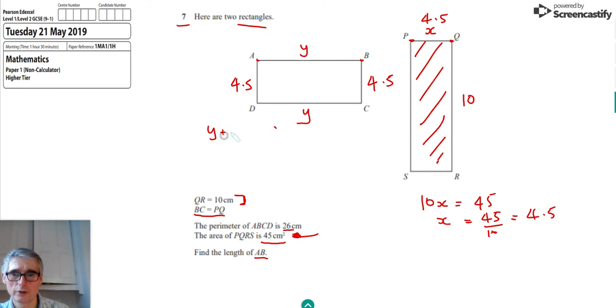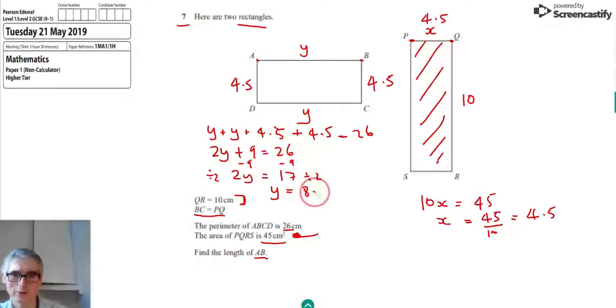We've got Y plus Y plus 4.5 plus 4.5. That's equal to 26. And if we simplify that, we get 2Y plus 9 equals 26. And we could subtract 9 from both sides. So there we go. And we end up with 2Y equals 17. And just a final step to divide both sides by 2 to leave the Y on its own. So divide by 2 there, divide by 2 there. We end up with Y equals 8.5.